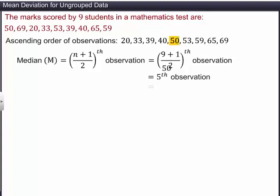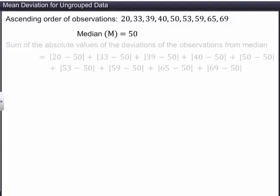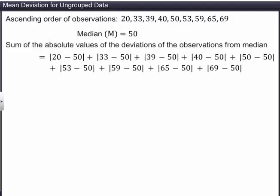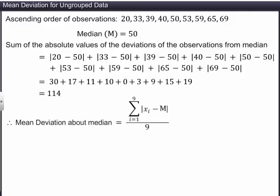Next, we'll find the sum of the absolute values of the deviations of all the observations from the median. This is equal to 114. The mean deviation about the median is equal to the sum of the deviations divided by the number of observations. This is equal to 12.66. Hence, the mean deviation about the median is 12.66.